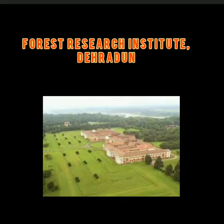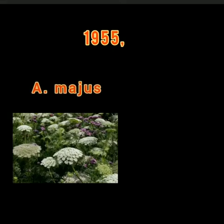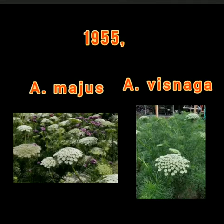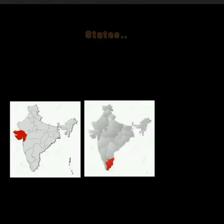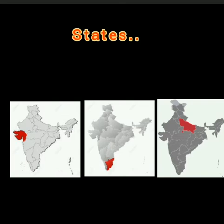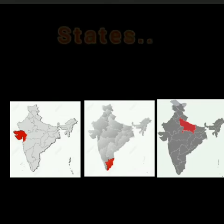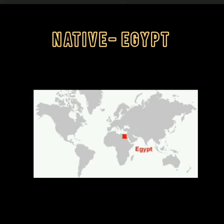Though it is an introduced crop to India, it was introduced through efforts of the Forest Research Institute, Dehradun, via UNESCO. During 1955, two species — Ammi majus and the related species Ammi visnaga — were introduced to FRI Dehradun. It is commercially grown nowadays in Uttar Pradesh, Gujarat, and Tamil Nadu as the major growing areas. It was a very traditional crop in its native Egypt and other Mediterranean countries.